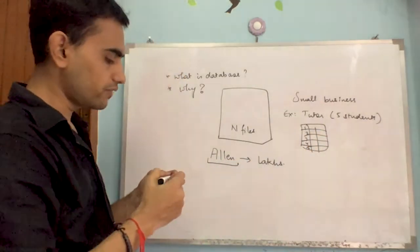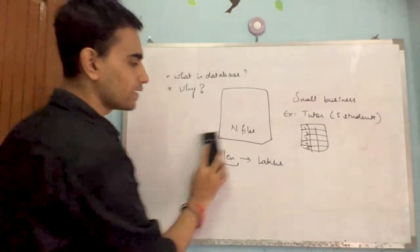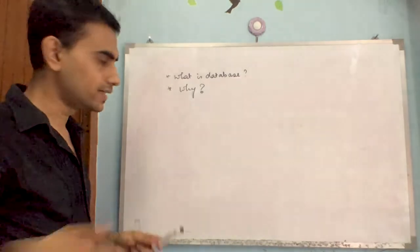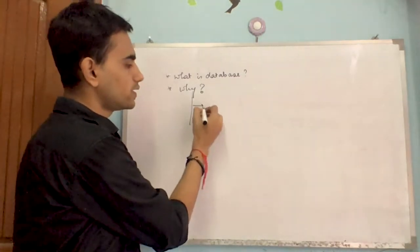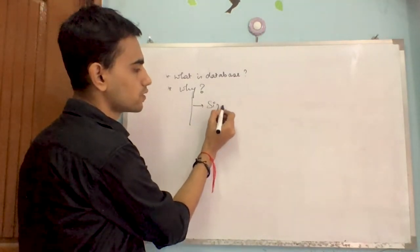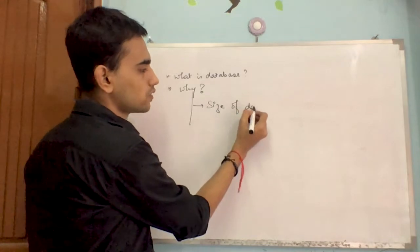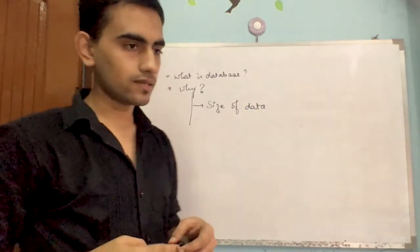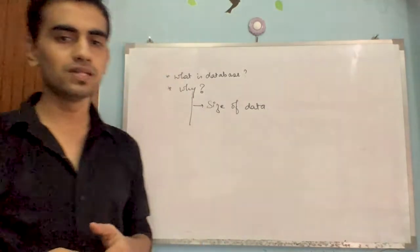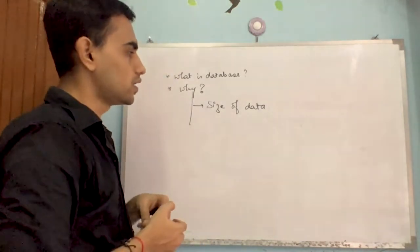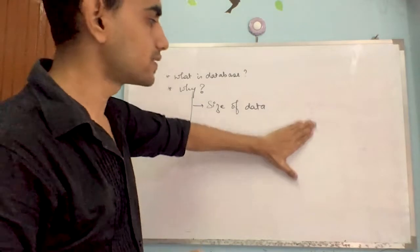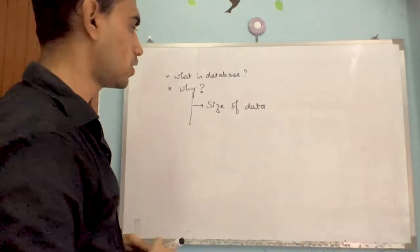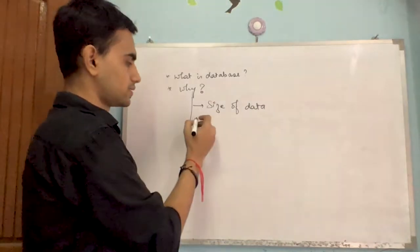So to summarize why we need a database: the very first point is the size of data. This is one very important aspect — the file system is not a scalable solution. You cannot rely on the file system for a huge increase in data or for large amounts of existing data.